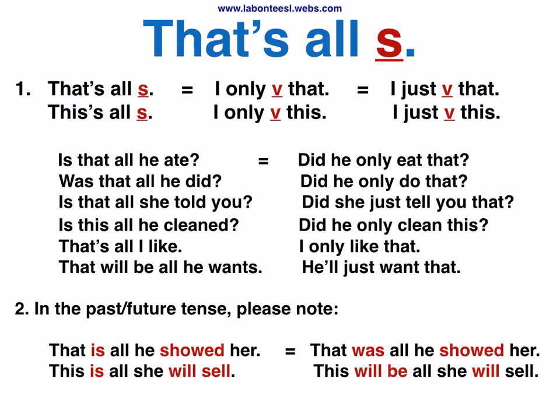In the past and future tense, please note: This is all he showed her. That was all he showed her. This is all she will sell. This will be all she will sell.